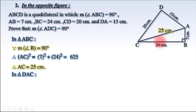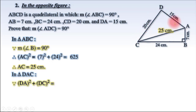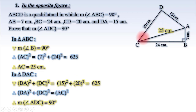In triangle ADC, since AC power 2 equals 625, and AD power 2 plus DC power 2 equals 15 power 2 plus 20 power 2 equals 225 plus 400 equals 625. Since AC power 2 equals DA power 2 plus DC power 2, therefore the measure of angle ADC is 90 degrees.